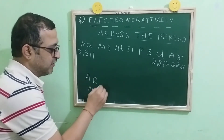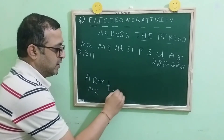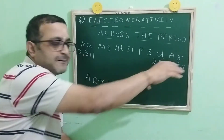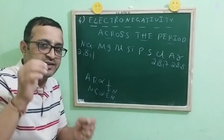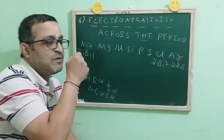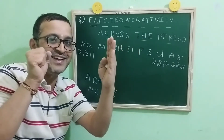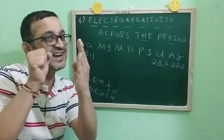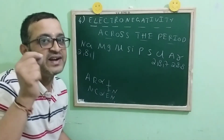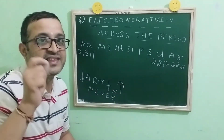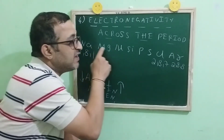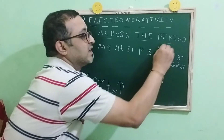Two factors affect electronegativity: atomic radius and nuclear charge. When you go across the period, the atomic radius decreases. As the atomic radius decreases, the electronegativity increases. So out of these elements, the smallest atom is chlorine — not argon.